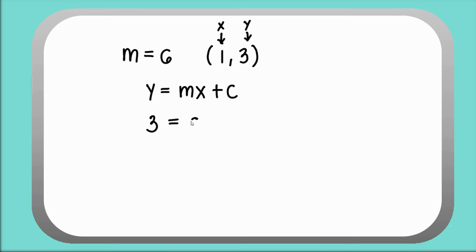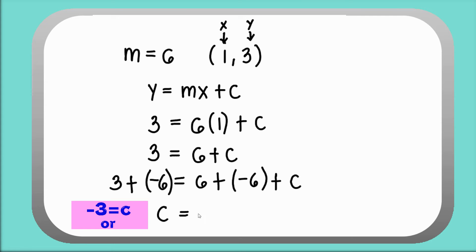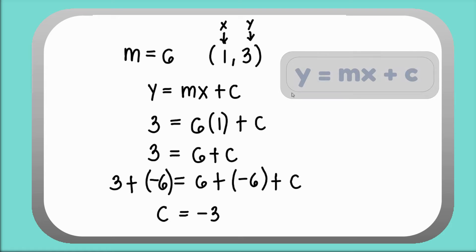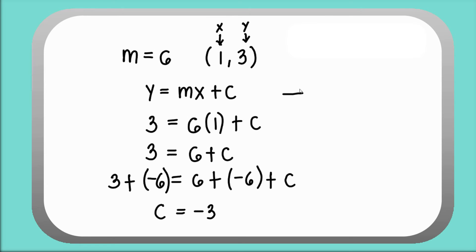3 = 6 × 1 + c, which becomes 3 = 6 + c. Using the addition property of equality, c is equal to negative 3. Then substitute the values of the slope and c into the equation y = mx + c. Therefore, it yields y = 6x − 3.